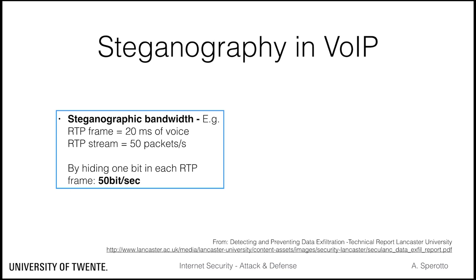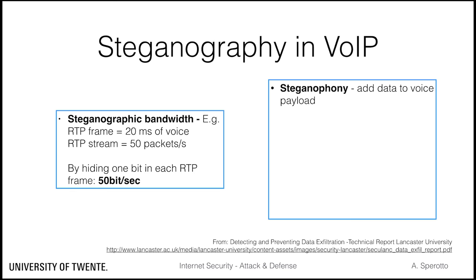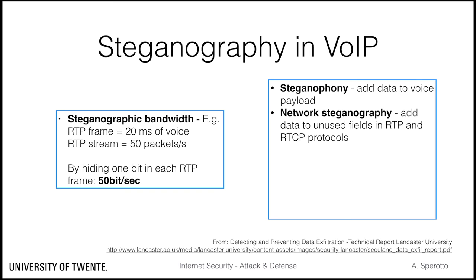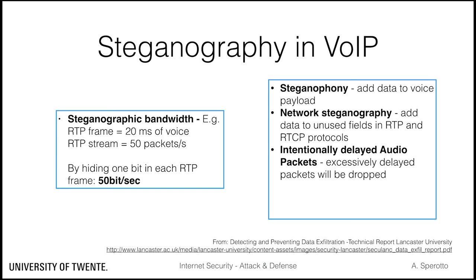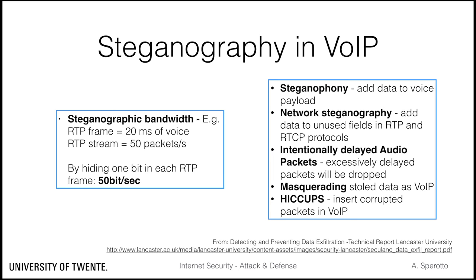Researchers have identified several techniques for VoIP steganography. Steganophony refers to adding additional data to the voice payload, taking care that overall quality is still acceptable. Data can also be added to unused fields in VoIP-related protocols. Audio packets can be intentionally delayed — since packets that arrive late will be discarded by real-time multimedia protocols, but they can still be picked up by the covert channel endpoint. Data can also be exfiltrated by masquerading it as VoIP traffic, by converting data octets into audio tones and faking a call. Finally, the ECAPS technique inserts malformed packets in the VoIP stream, leveraging the fact that those would be dropped at the destination but intercepted by the covert channel endpoint.